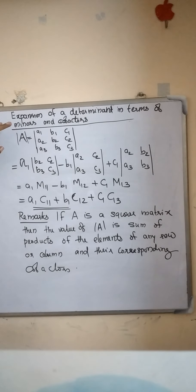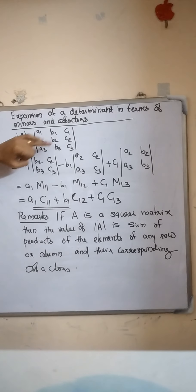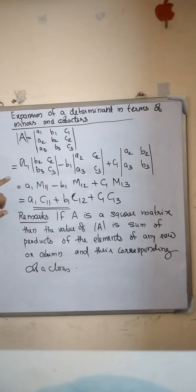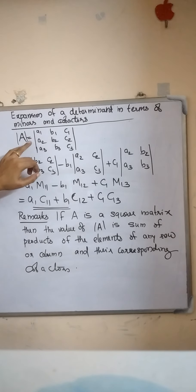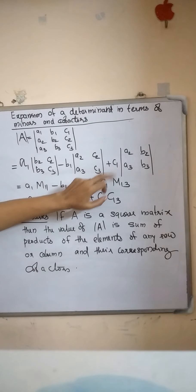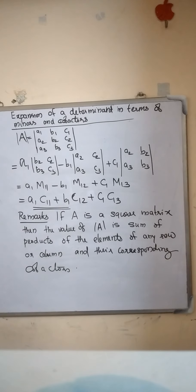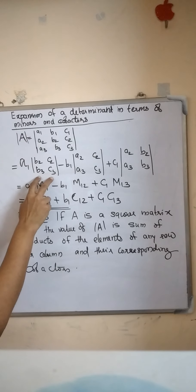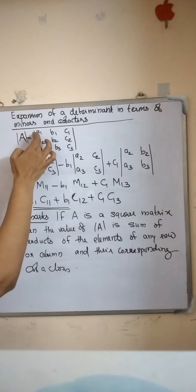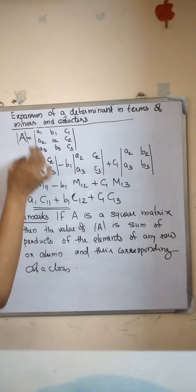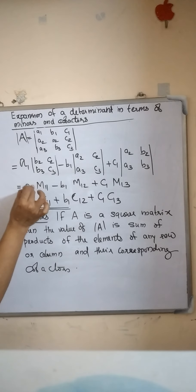Expansion of a determinant in terms of minors and cofactors. Consider the determinant A1, B1, C1, A2, B2, C2, A3, B3, C3. Expanding through the first row gives: A1 into the determinant B2, C2, B3, C3 minus B1 into the determinant A2, C2, A3, C3 plus C1 into the determinant A2, B2, A3, B3. The determinant B2, C2, B3, C3 is the minor of A1, obtained by deleting the row and column in which A1 belongs.